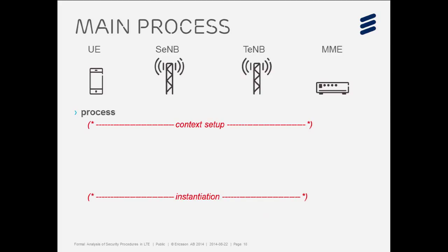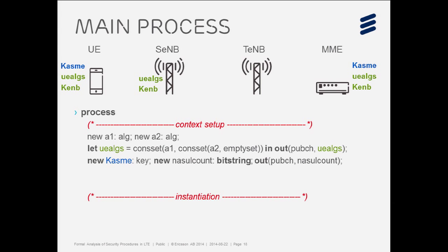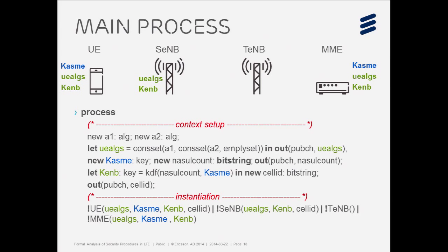In the main process, we set up the initial context. Capability sets are shared, along with the KASME key and Key eNodeB. The instantiation uses the unbounded replication operator (exclamation mark) and parallel composition (vertical bar), meaning we run in parallel an unbounded replication of these processes. This is quite powerful because ProVerif will attempt to prove security properties regardless of the number of replications.